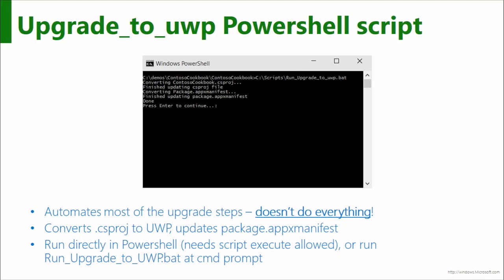It's up on GitHub, so we'll be happy to take contributions from anyone who wants to make it better. It was a tool we created to help take samples from 8.1 and make them work on UWP for training purposes. What it does is automate most of the upgrade steps to your project file, CSproj file, and the package manifest.